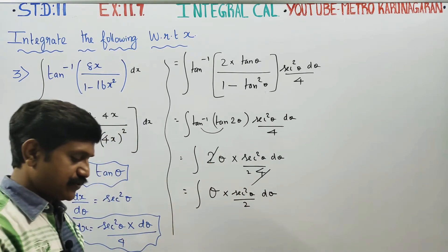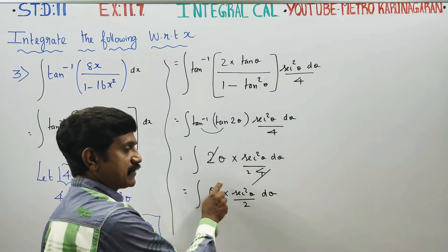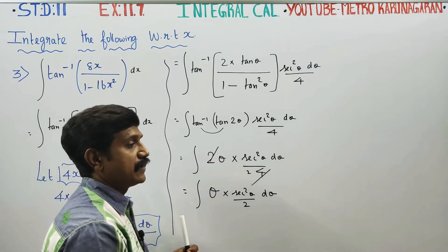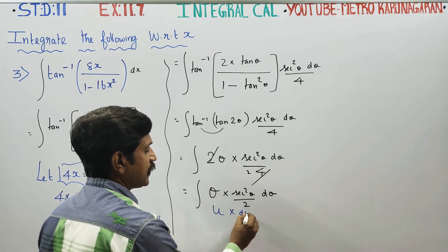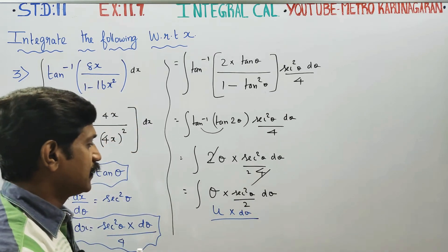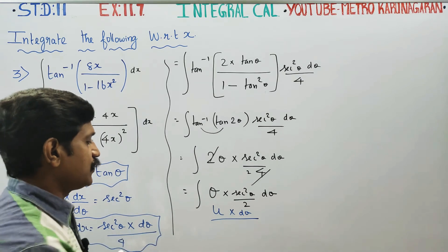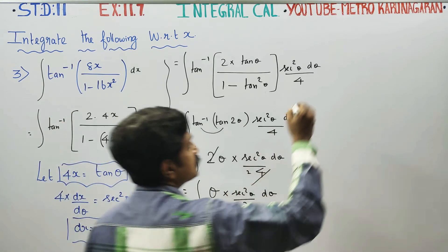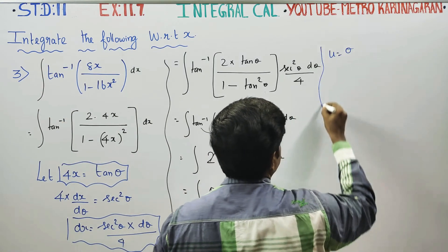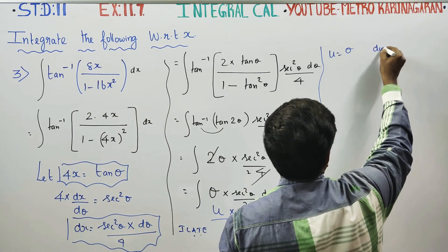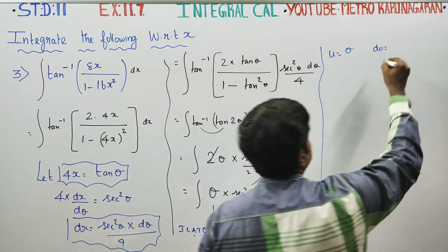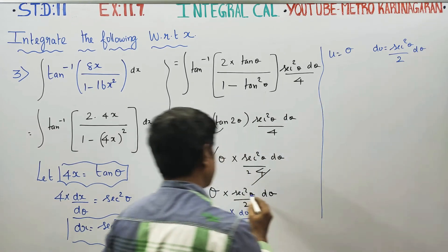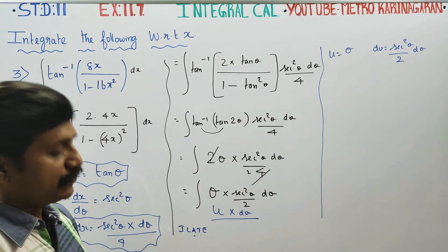In this sum, we have a product of an algebraic function and a trigonometric function. So we use the u, dv method — integration by parts. Using the ILATE rule, algebra comes first, so u equals theta. Then dv equals secant square theta d theta by 2.